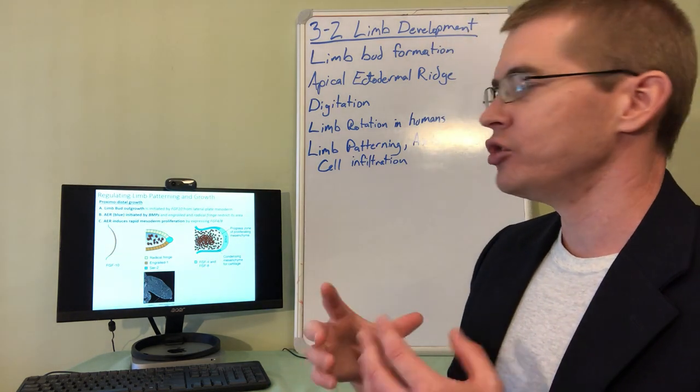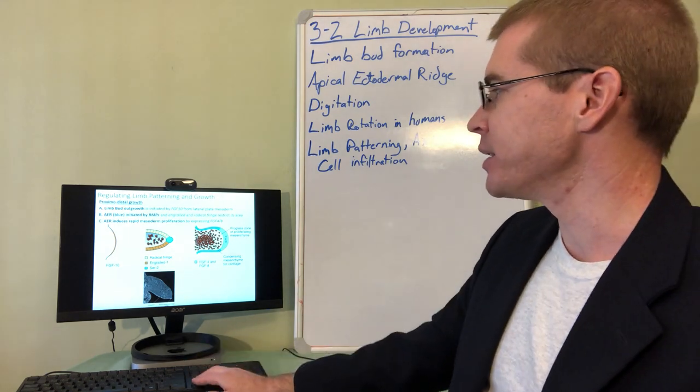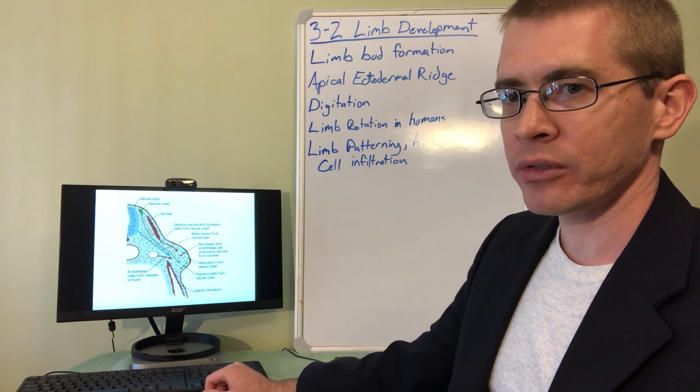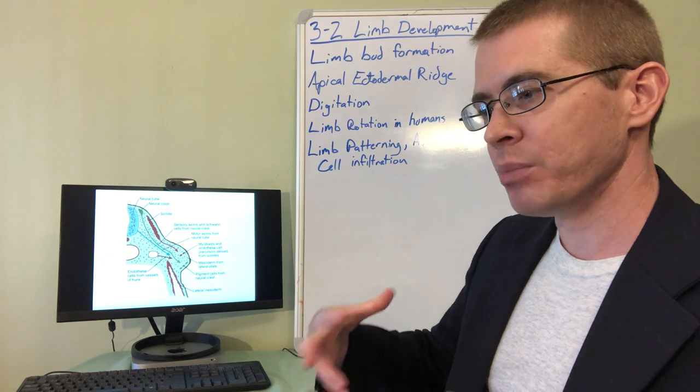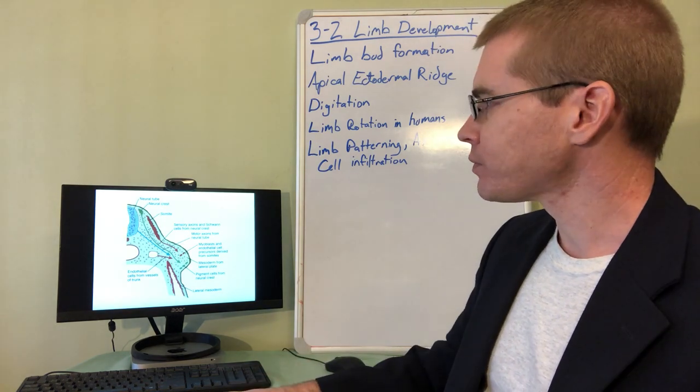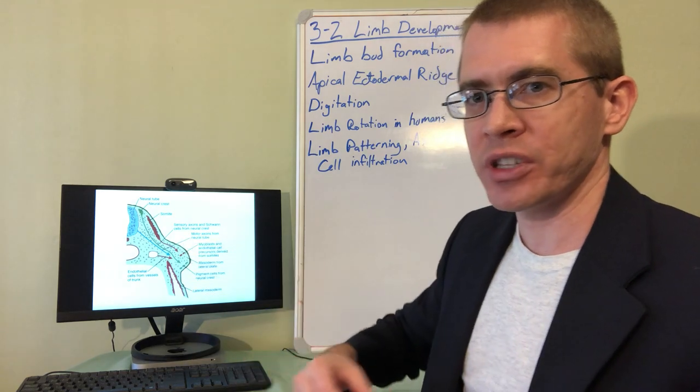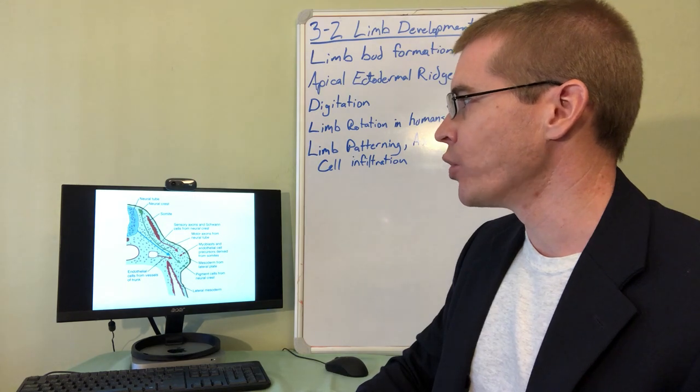That then induce proliferation of the mesoderm that's infiltrating that limb bud. And it's that infiltration of the mesoderm, that proliferation, that builds up and creates the bone models in the musculature. So here we can see these different colored arrows represent the different tissues that end up infiltrating the limb bud as it's forming.